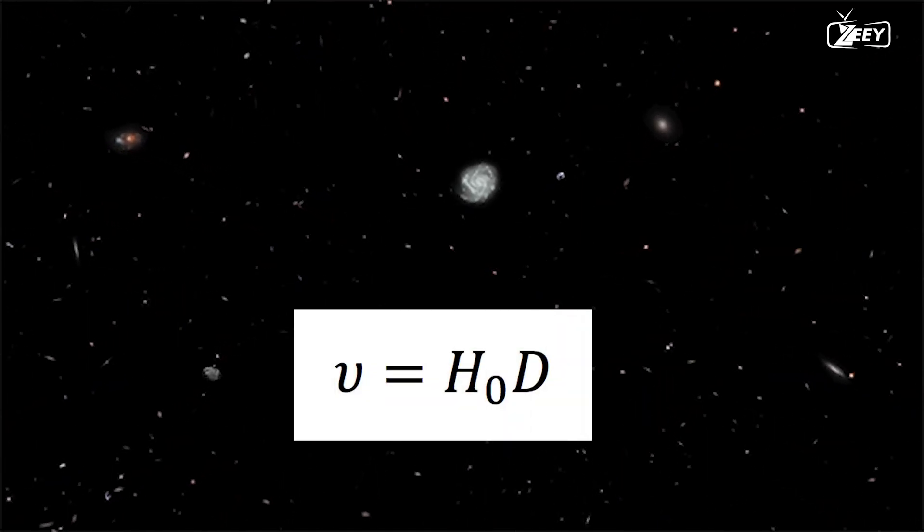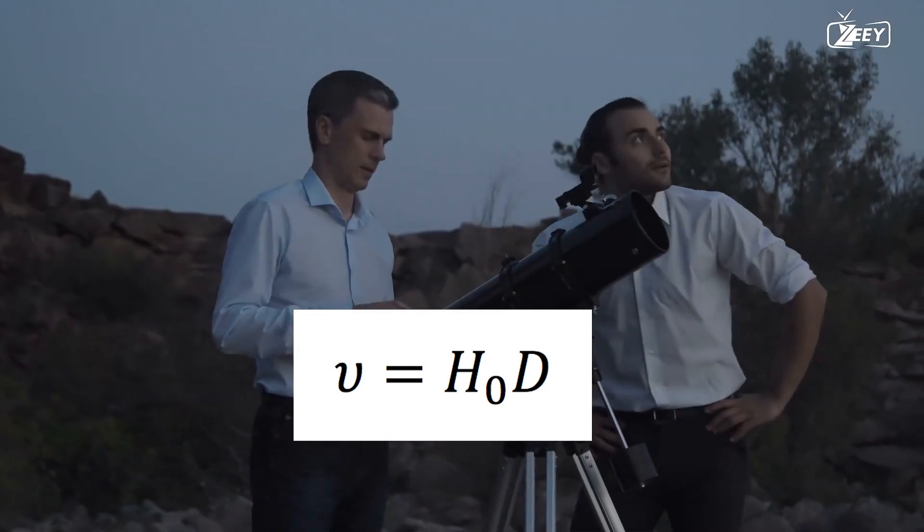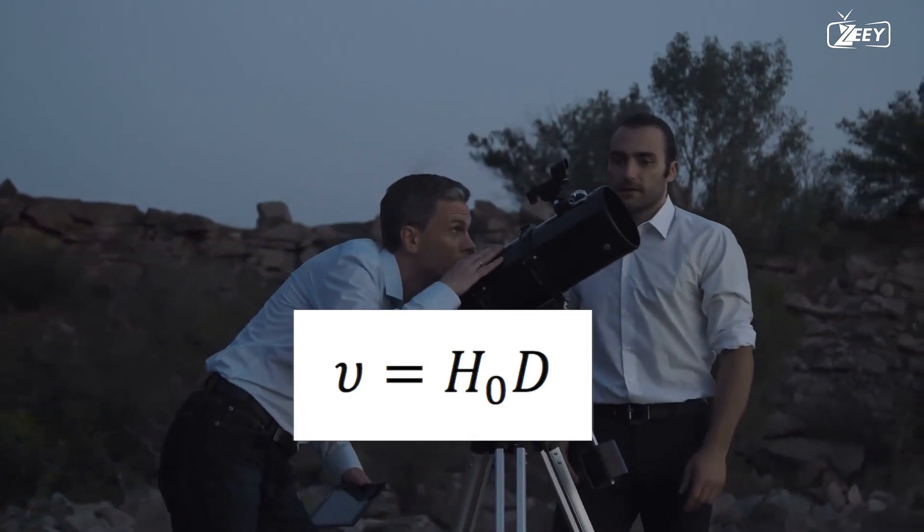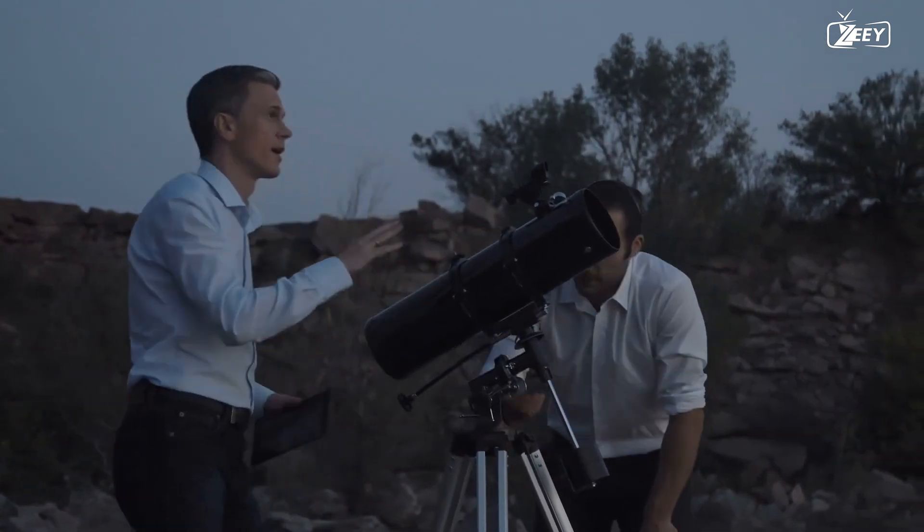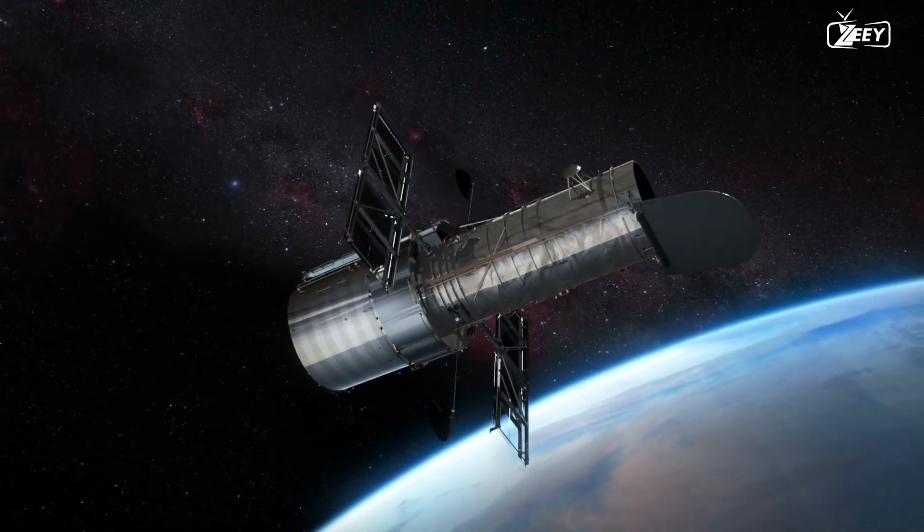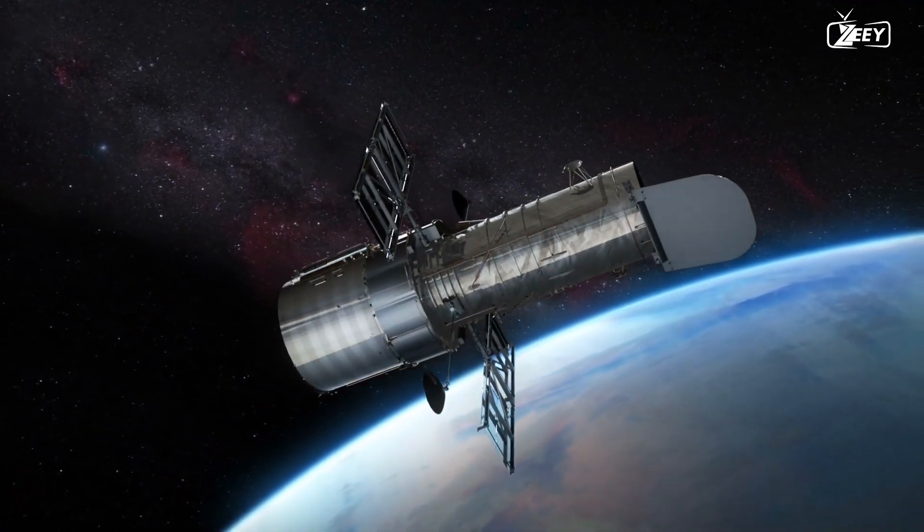The Hubble constant is the quantity that compares the two sides. But why are cosmologists so dependent on this constant? What conclusions can we draw from carefully measuring it? Finally, and most importantly, how have recent Hubble Space Telescope observations demonstrated that our current understanding of the universe is seriously flawed?